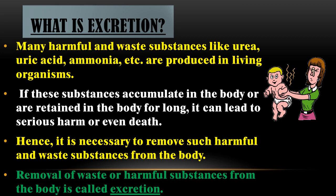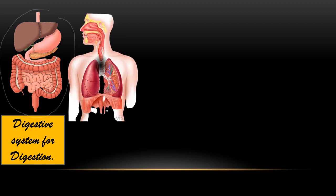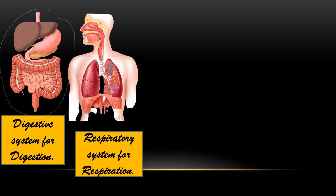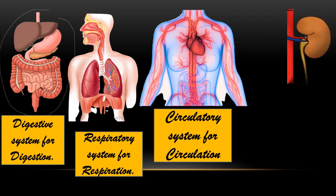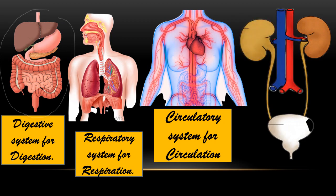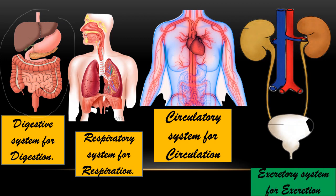There are different organ systems in the human body for different life processes: the digestive system for digestion, the respiratory system for respiration involving lungs and trachea, and the circulatory system for circulation of blood throughout the body. The heart pumps blood, and filtration of the blood supplies oxygenated blood to the whole body. The digestion process produces energy but also generates many harmful substances, and the excretory system carries out the removal of these waste materials.